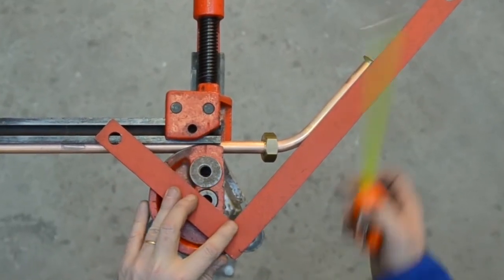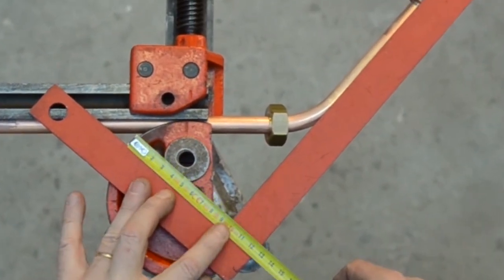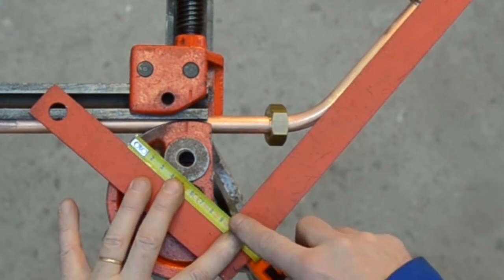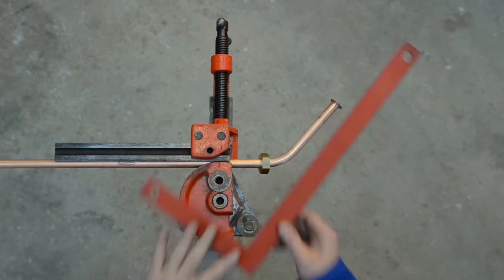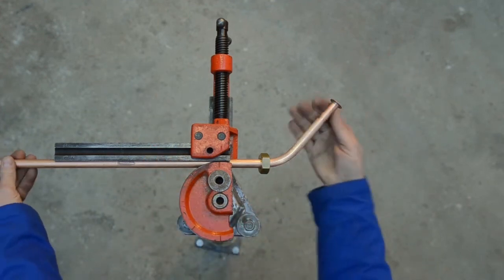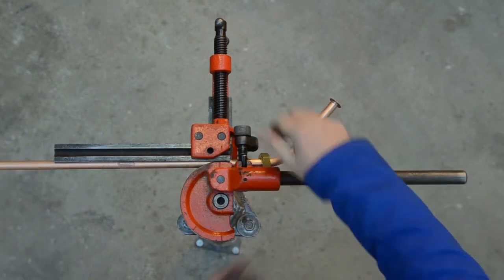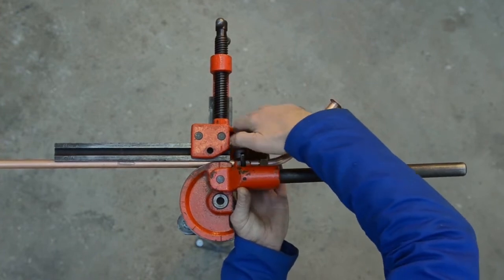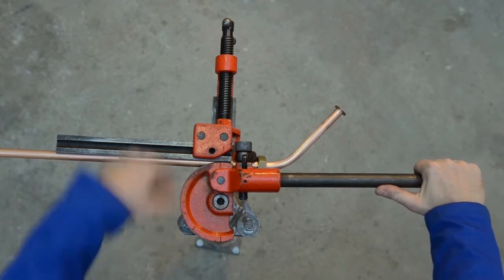Dans notre exemple, nous souhaitons obtenir une côte de 95 mm. N'oubliez pas la planilité de la pièce. Et cintrez le deuxième coude à 45 degrés.